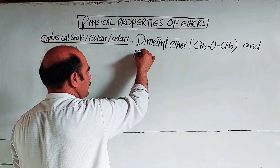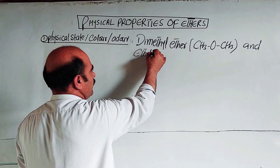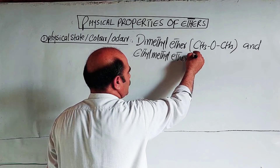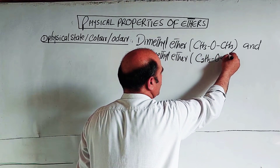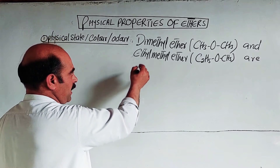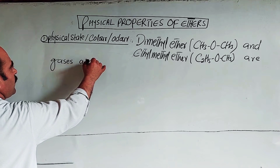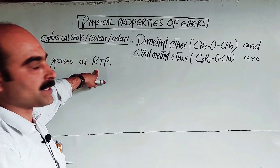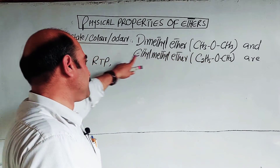Methyl ethyl ether — this is the ethyl group C2H5 and this is the methyl group CH3. Under normal conditions of temperature and pressure, the lower members — dimethyl ether and ethyl methyl ether — are gases at room temperature and pressure.